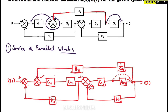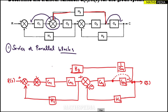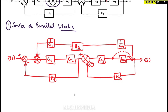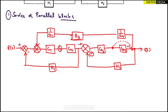For shifting the summing point before the block — you've jumped over G1 — the same rule applies: shifting a summing point before a block means taking the reciprocal. So I take 1/G1 and add it to the H3 line. I'll remove the old line and connect it as 1/G1 into H3. Now the three blocks in the feedback path are all in series.